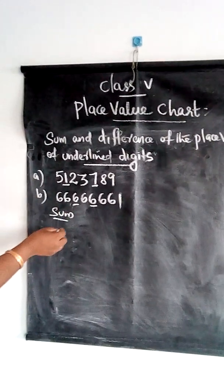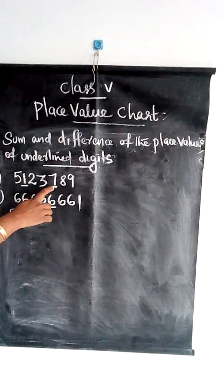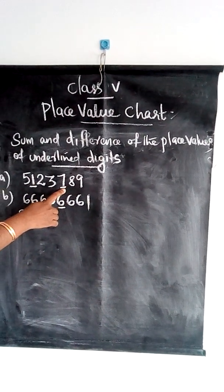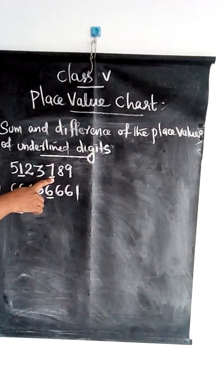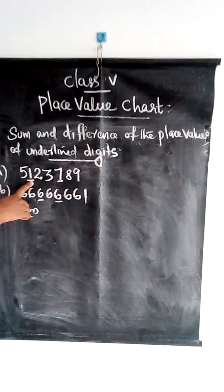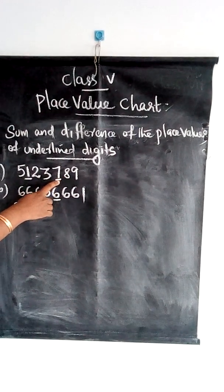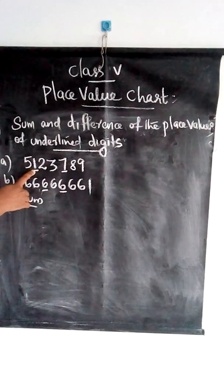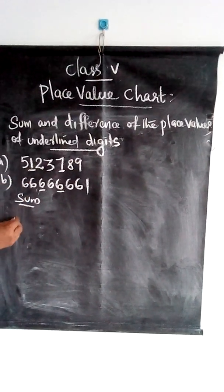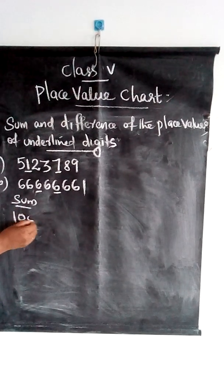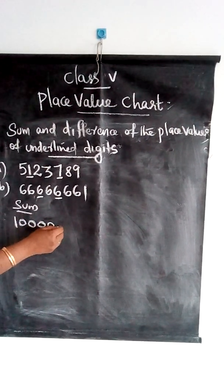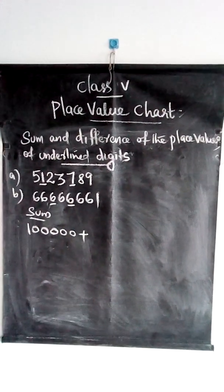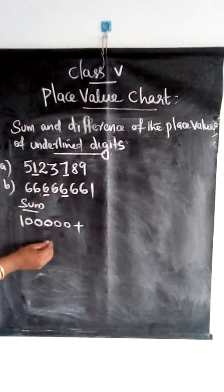What is the place value of 7? Counting the positions — ones, tens, hundreds — so the place value of 7 is 700. And what is the place value of 1? Counting — ones, tens, hundreds, thousands, ten thousands, lakh — so 1 lakh is the place value of 1. Therefore: 1 lakh plus 700.